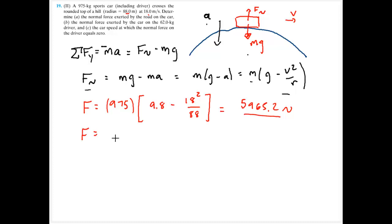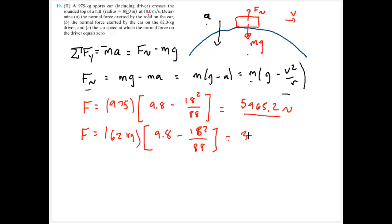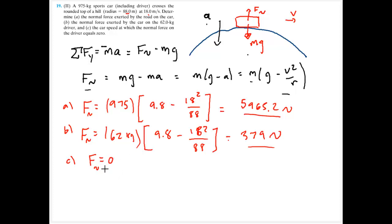The same expression applies for the force on the driver, but with mass 62 kilograms: 9.8 minus 18 squared divided by 88, giving 379 newtons — much less than the driver's 608 newton weight. For part c, we ask: at what speed does the normal force equal zero?